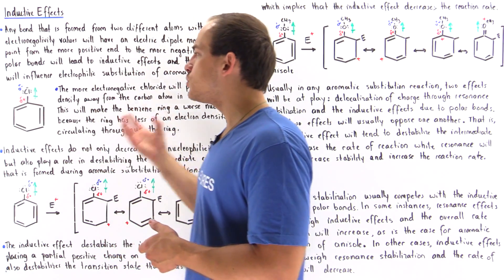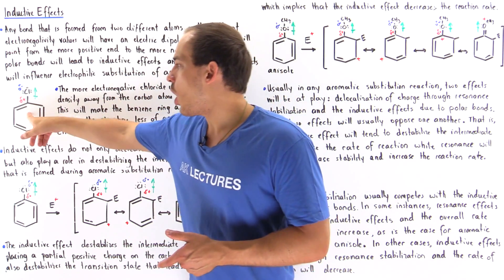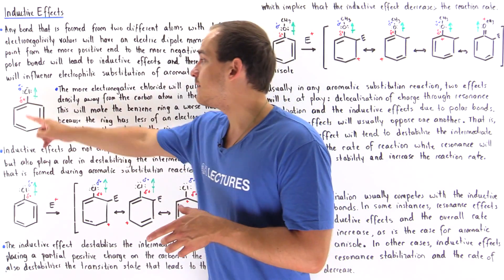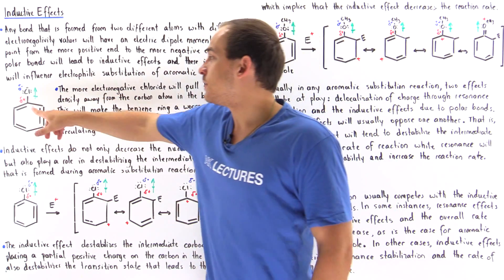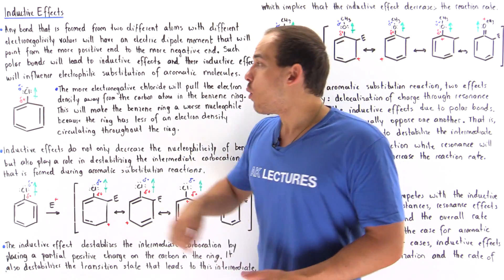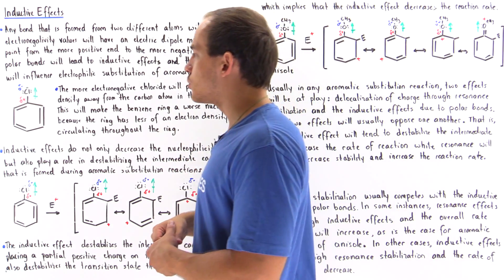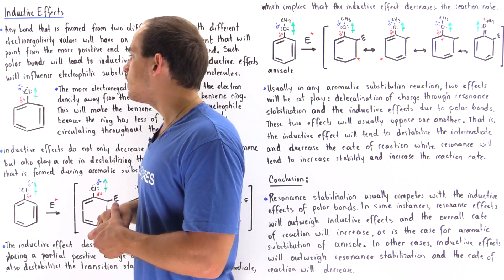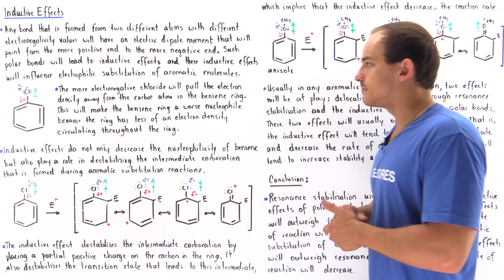Let's suppose we have the following mono-substituted benzene molecule — chlorobenzene. The bond between chloride and carbon will be a polar covalent bond. Because chloride is more electronegative than carbon, the electrons will be pulled closer to the chloride and away from that carbon. The carbon will become electron deficient, gaining a partial positive charge, while the chloride will gain a partial negative charge. The electron density will shift toward the chloride, and the electric dipole moment will point from the carbon to the chloride atom.